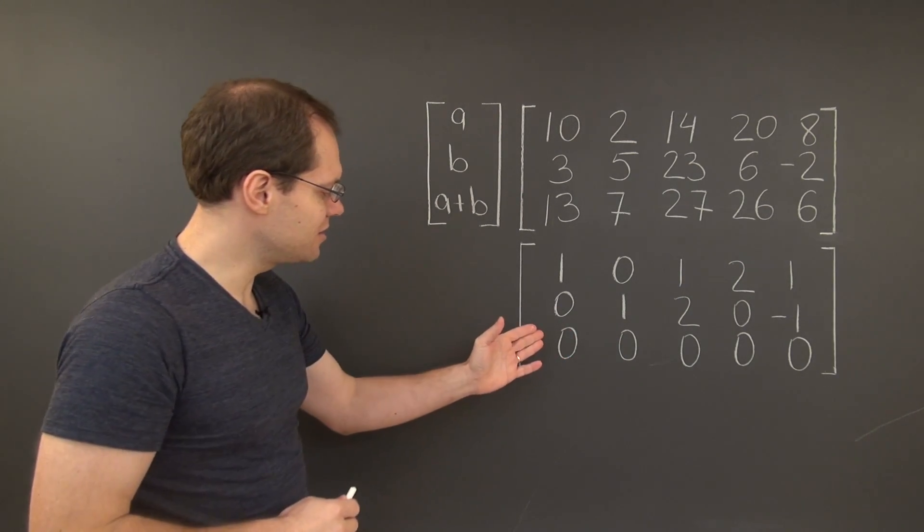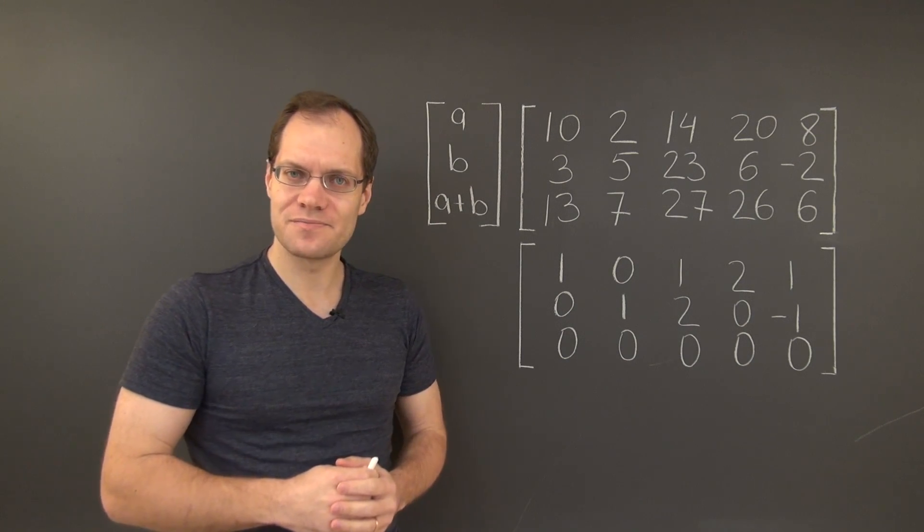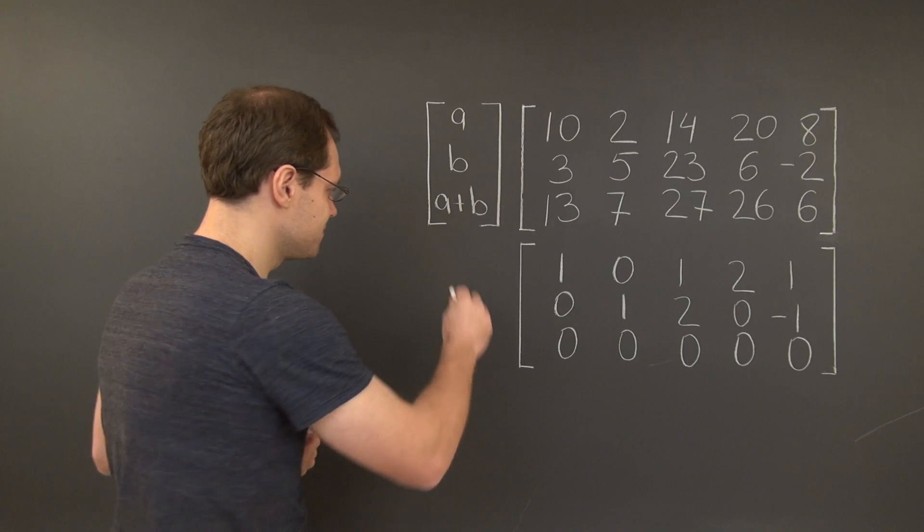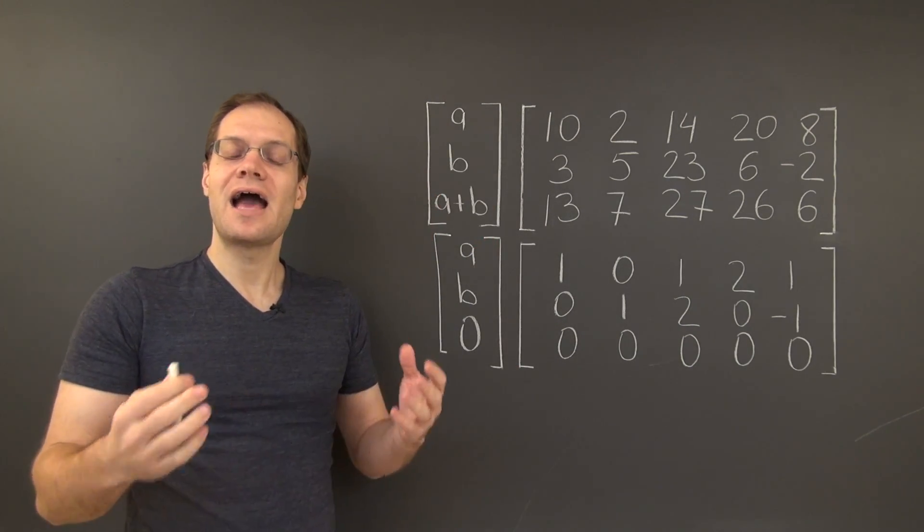But in any case, the column space of this matrix is of course A, B, zero. As we expected.